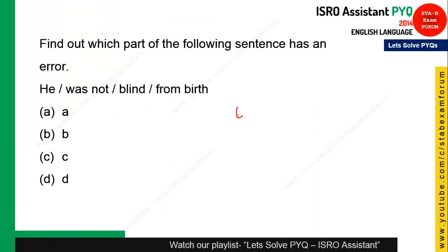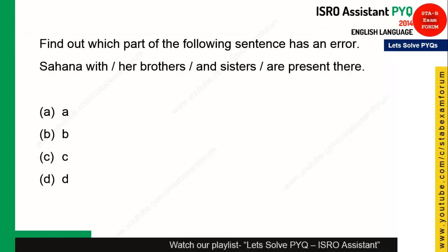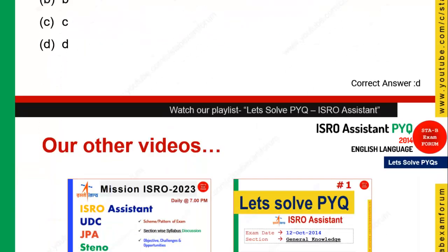These questions are from error detection. First: 'He was not blind from birth' — the correct phrase is 'by birth,' so option D is the answer. Second: 'Sahana with her brother and sister are present there' — since 'Sahana' is the main subject, the verb should agree with it, making it 'is present there.' Option D is the correct answer.